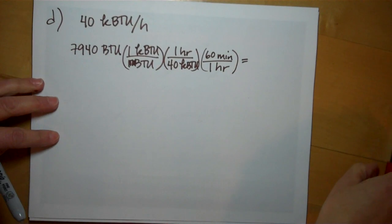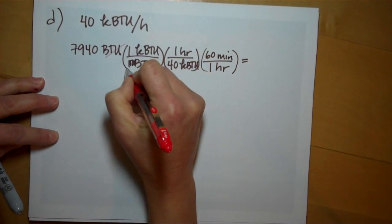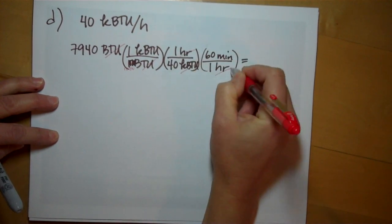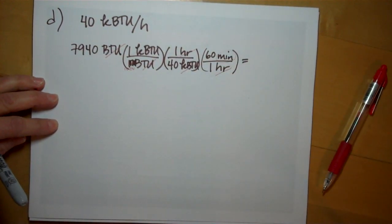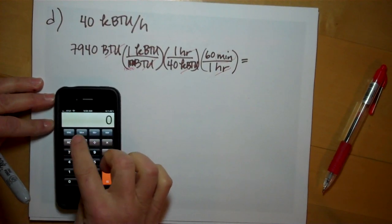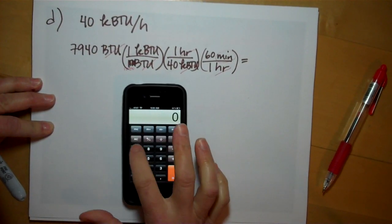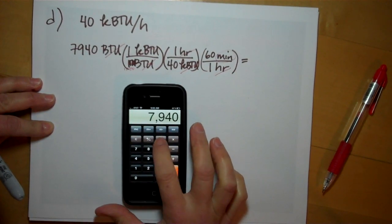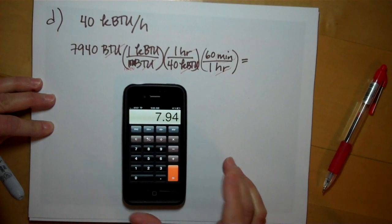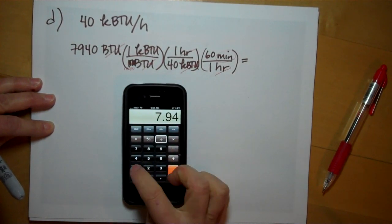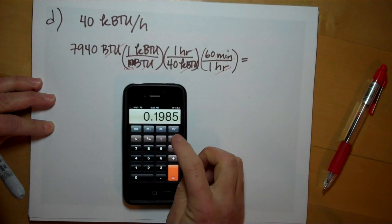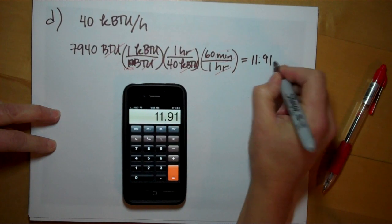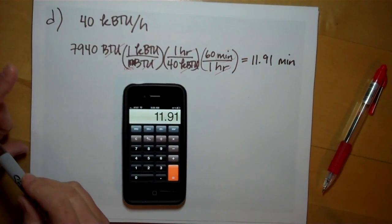Every one hour is 60 minutes. So units are going to cancel. BTUs will go away, kilobtus will go away, hours will go away, and I'm going to find out how many minutes it's going to take to heat this up. 7940 divided by 1000 just moves the decimal place. Divide by 40 times 60.